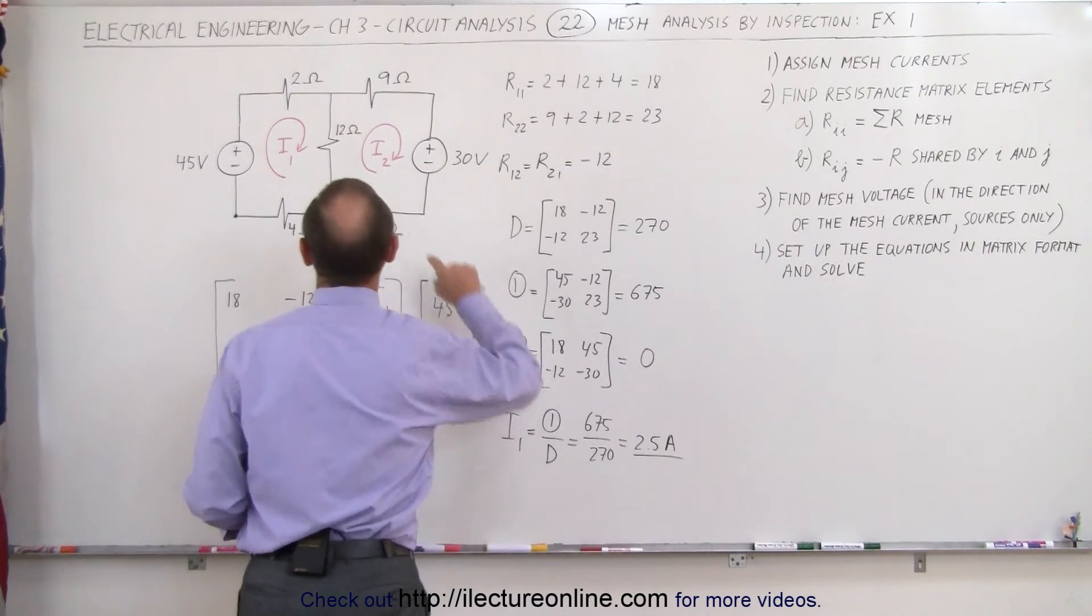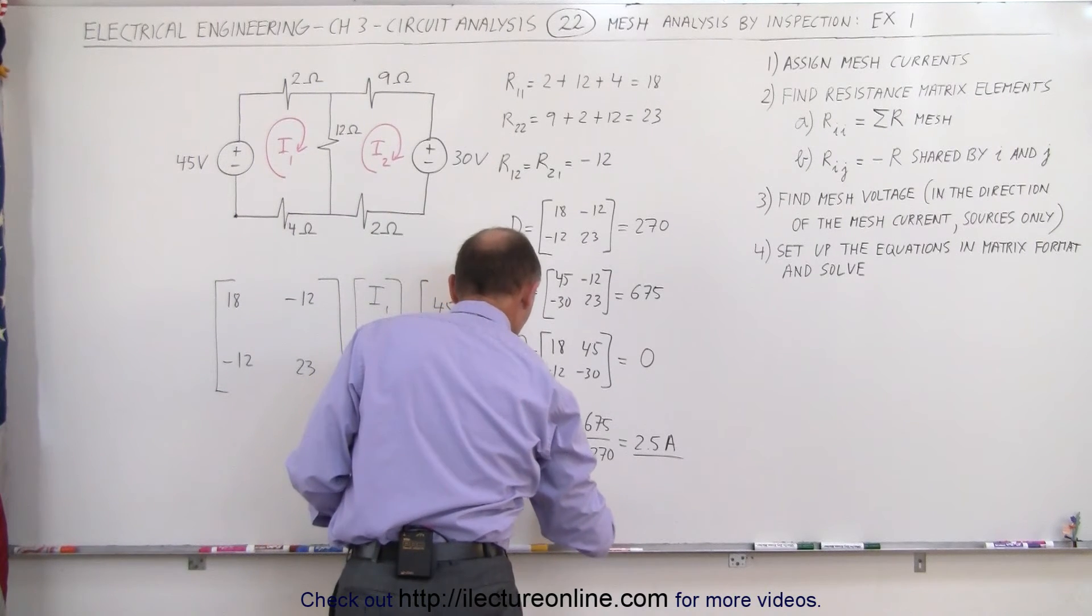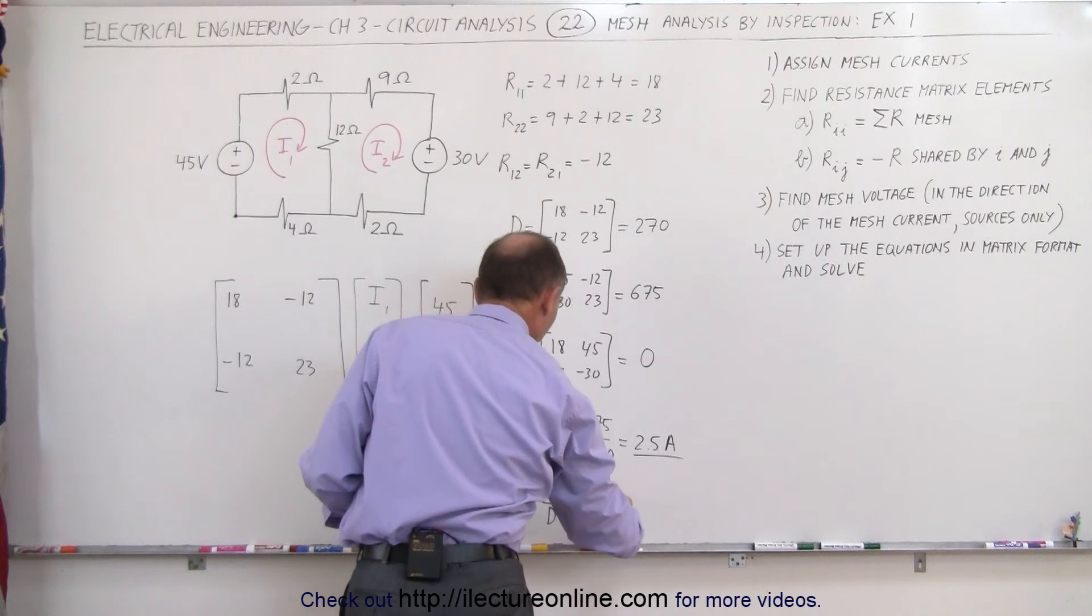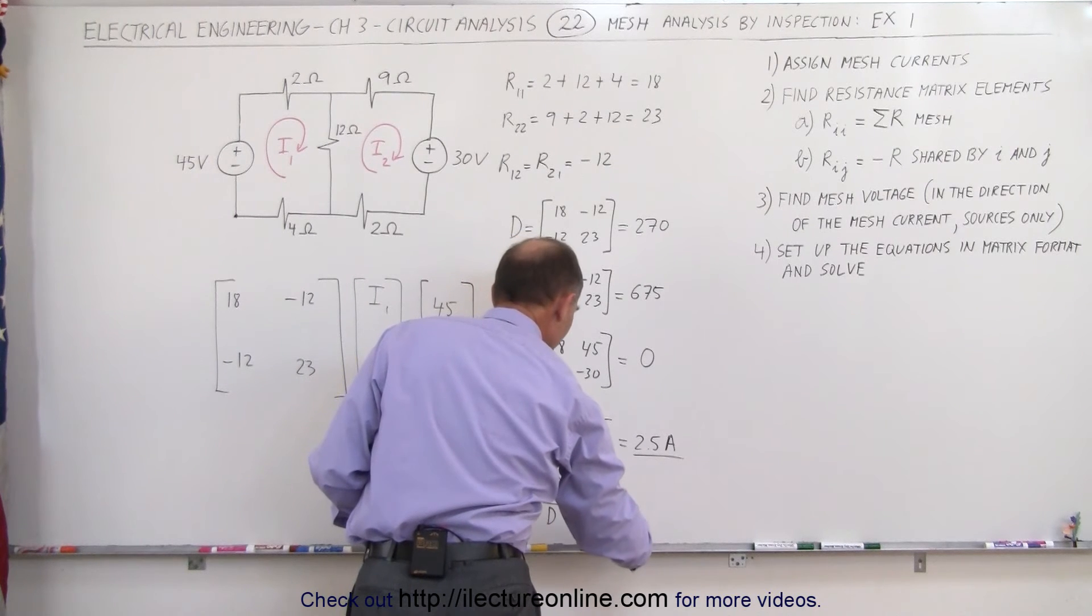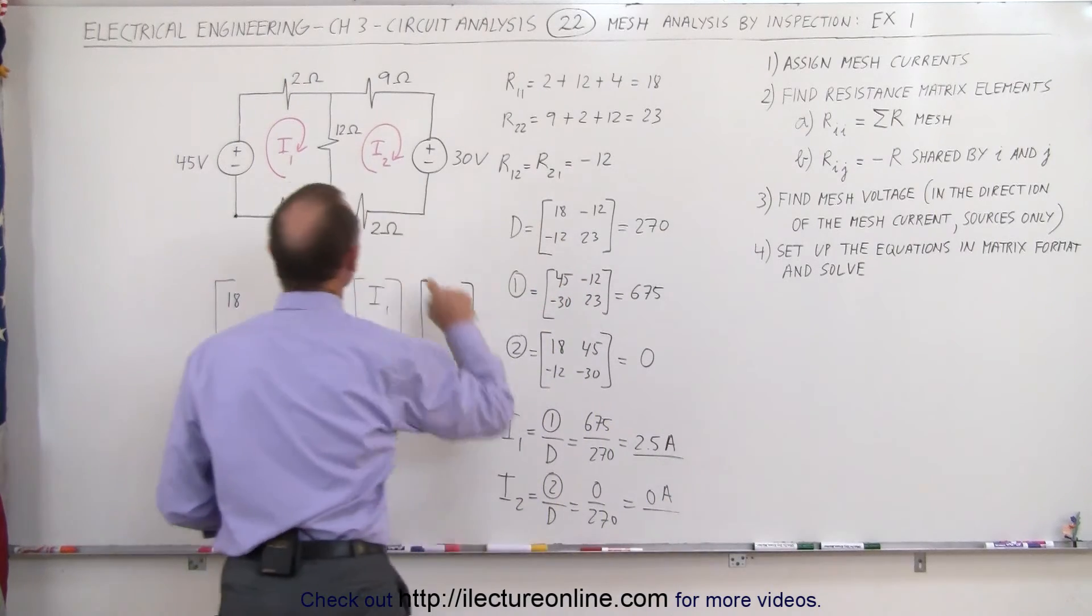The second mesh, I2, that is equal to the result of the second matrix divided by 270, is still 0. So we get 0 amps of current in the second mesh.